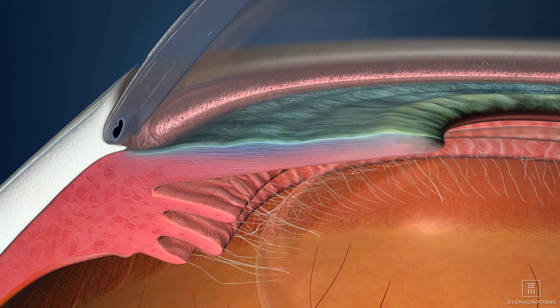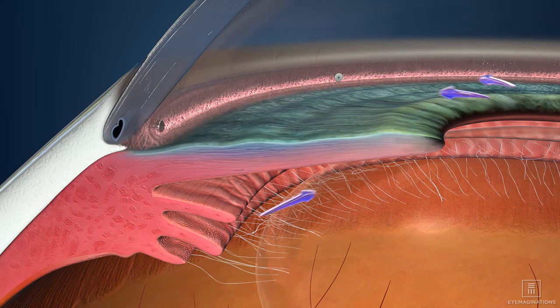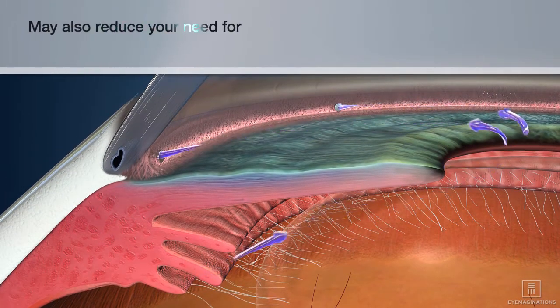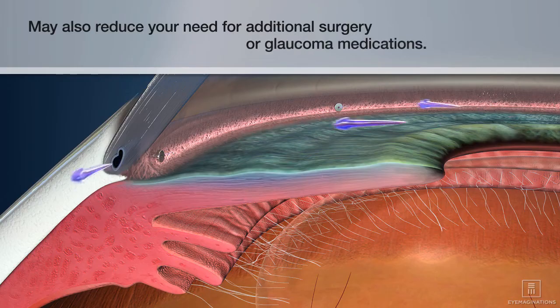The Eye Stent Inject system does this by creating tiny channels to allow fluid to drain from the eye. The device may also reduce your need for additional surgery or glaucoma medications.